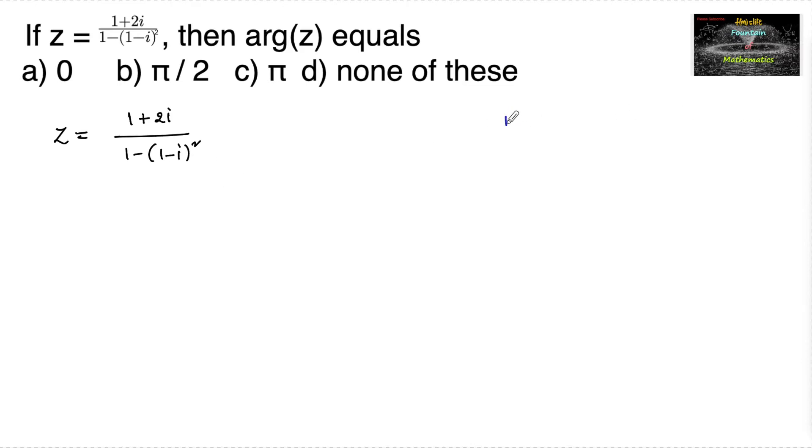So let us simplify the denominator. 1 minus of 1 minus i whole square, which is equal to 1 minus of 1 square plus i square minus 2i. So which is equal to 1 minus of 1 plus i square is minus 1 minus 2i. So which is equal to 1 minus of, 1 minus 1 gets cancelled, and so we have minus 2i.